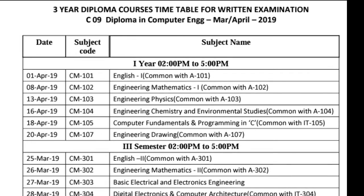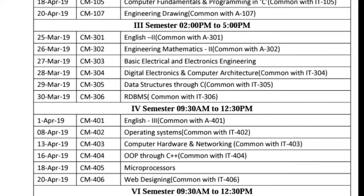Next branch is diploma in Computer Engineering C09 — date, subject code, subject name — first year, two afternoon at 2 p.m., two evening at 5 o'clock. Next: third semester and fourth semester.